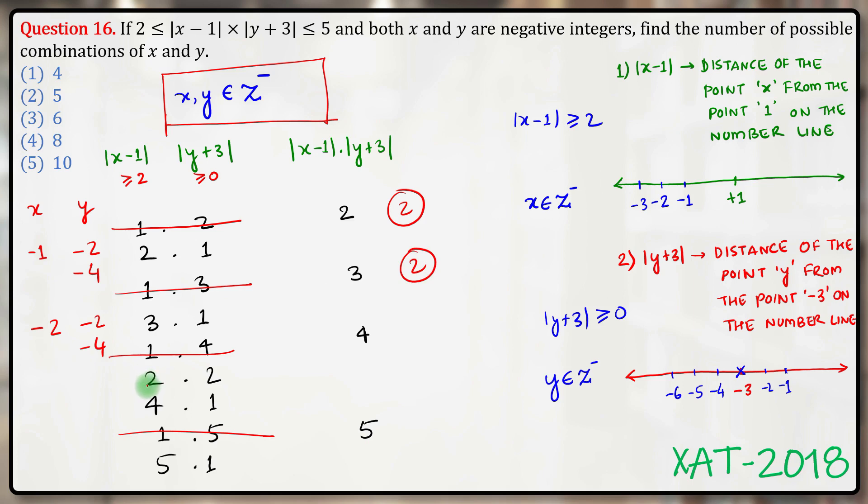Again for mod of x minus 1 to be 2, x must be minus 1, and for mod of y plus 3 to be 2, y could be either minus 5 or minus 1. For mod of x minus 1 to be 4, x must be minus 3, and for mod of y plus 3 to be 1, y must be either minus 2 or minus 4.